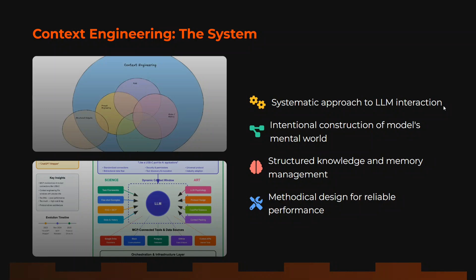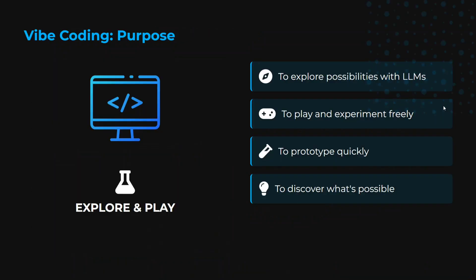Vibe coding may or may not give you results, while context engineering will give you results. The purpose of vibe coding is mostly to explore possibilities, to play and experiment, to prototype quickly. You don't know anything about a topic, you're just vibe coding, asking it to do something. It's completely based on gut and is more towards the exploration side of things.